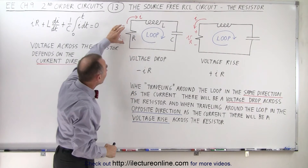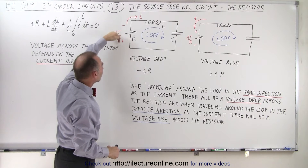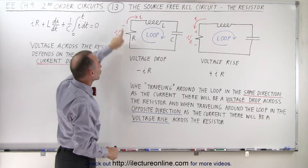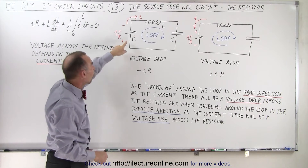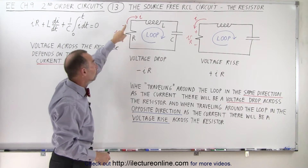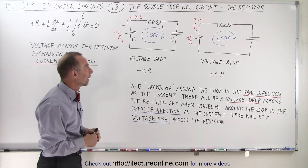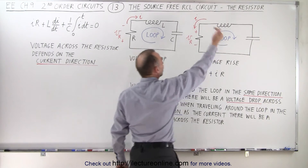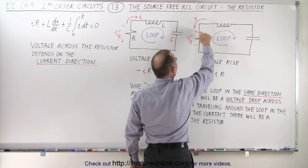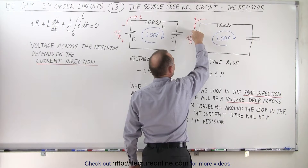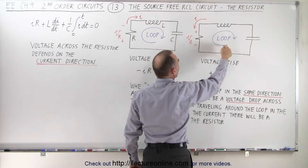If you think of this as a source, notice the source points in the opposite direction of the current flow. In other words, the resistor always opposes the flow of current. Now, if the current changes direction, notice the polarity of voltage flips, and now we have a positive end here and a negative end there.